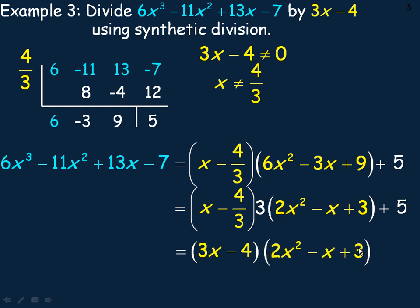And then the 2x² - x + 3 plus the 5. That's the division statement now with the 3x minus 4.